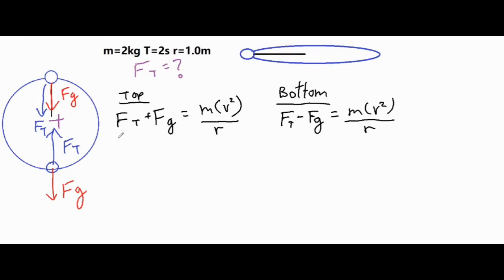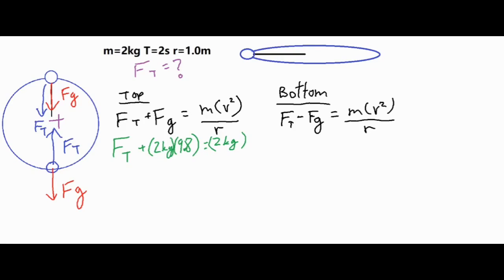So if we're looking for FT, that's our final unknown. For FG, we do mass times 9.8 — mass is 2 kilograms times 9.8 — and that equals mass times the centripetal acceleration. The centripetal acceleration is always V squared over R. We have a mass of 2 kilograms, and we don't have a velocity directly, but we can use a second formula and do a substitution.